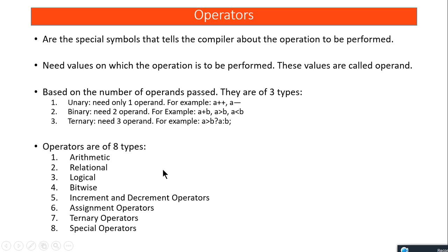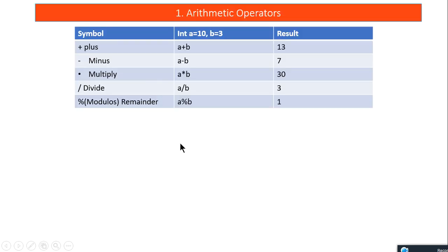First are arithmetic operators — plus, minus, multiply, divide. There is also the modulus operator using the % symbol. For example with values 10 and 3: 10 + 3 = 13, 10 - 3 = 7, 10 * 3 = 30, 10 / 3 = 3, and 10 % 3 = 1 (the remainder). Then come relational operators used to compare two or more values: less than, less than or equal to, greater than, greater than or equal to.